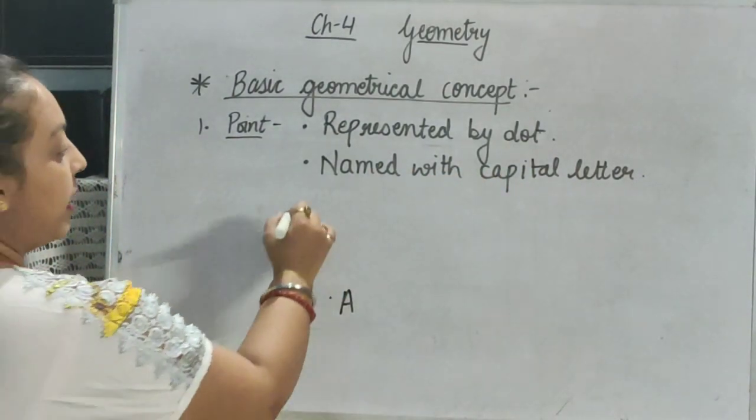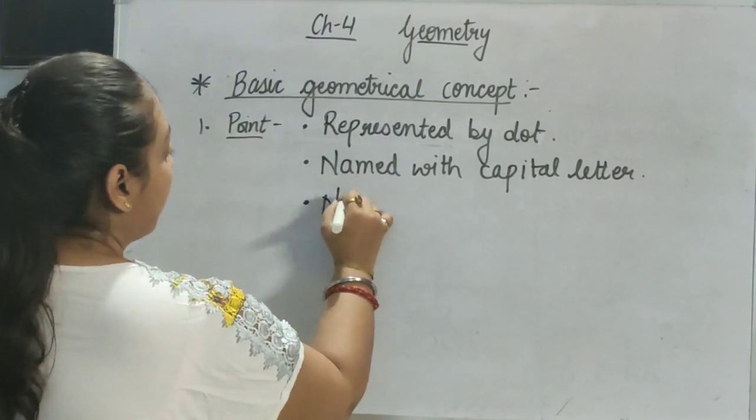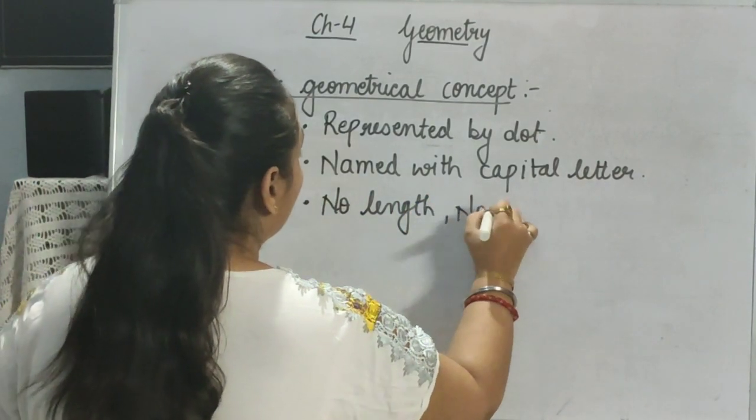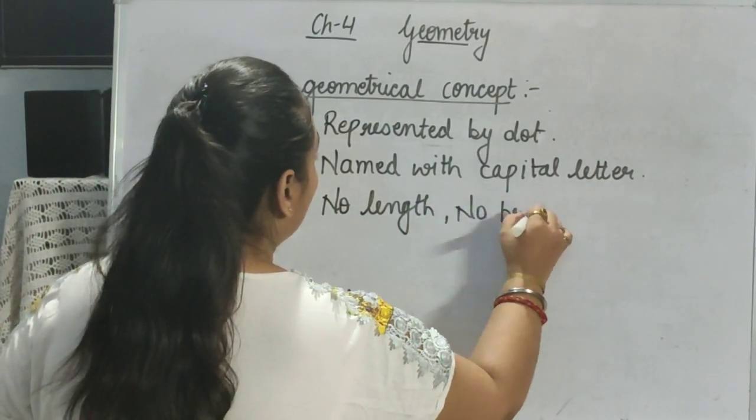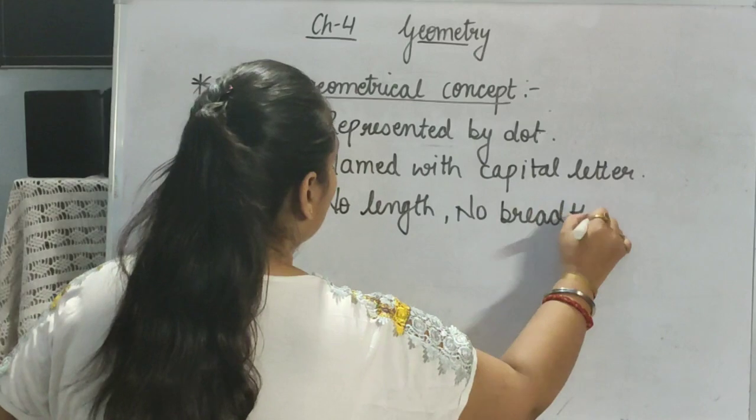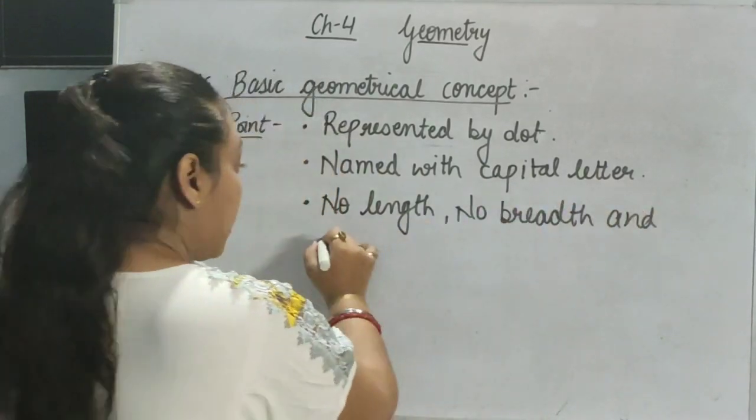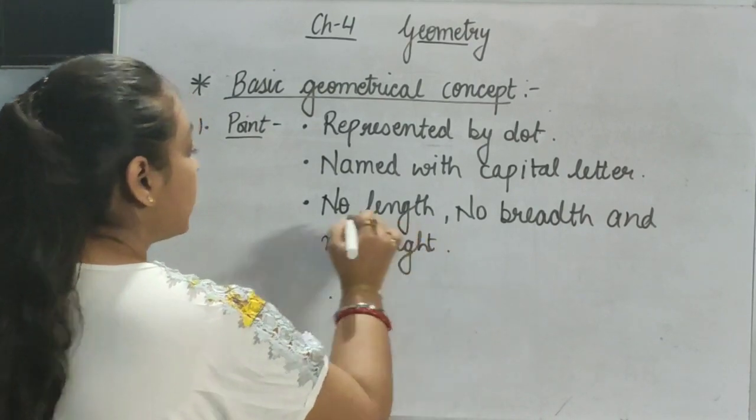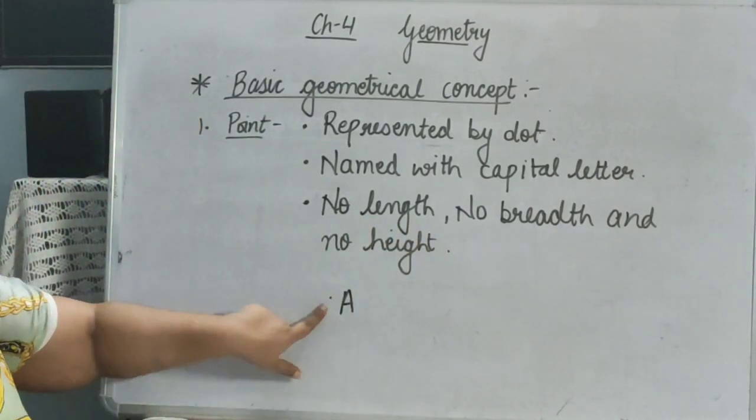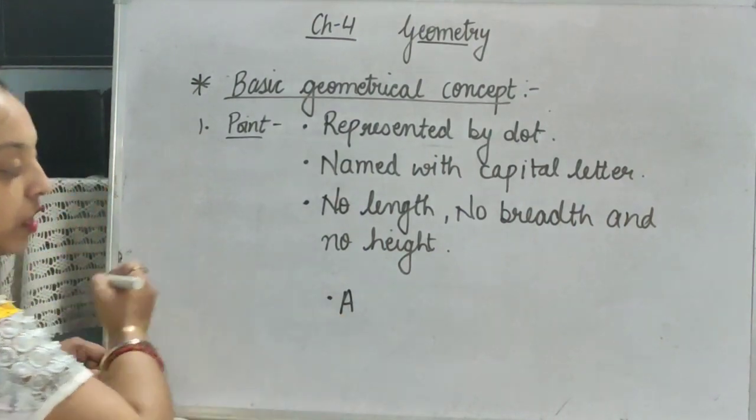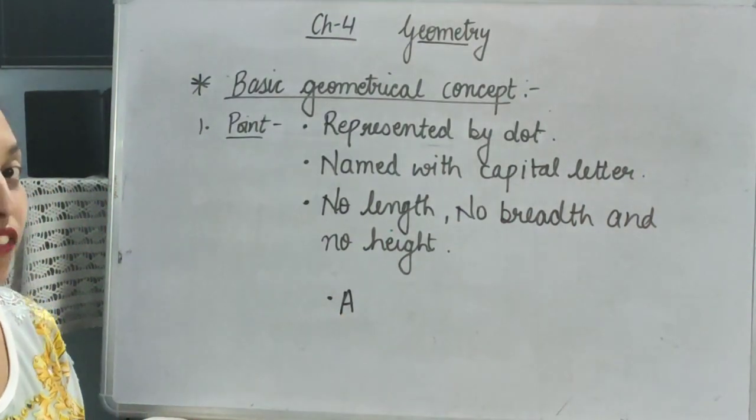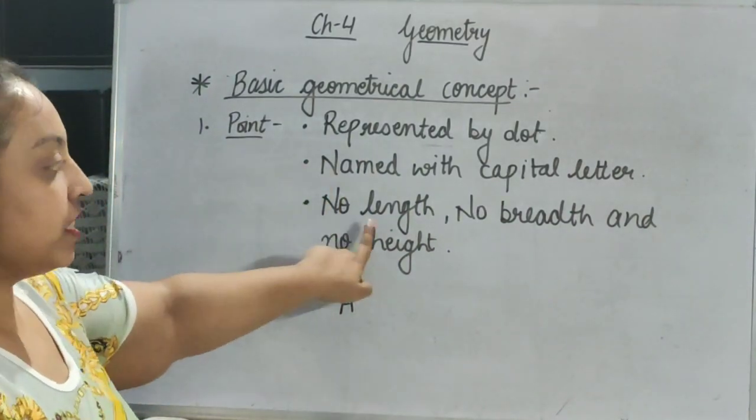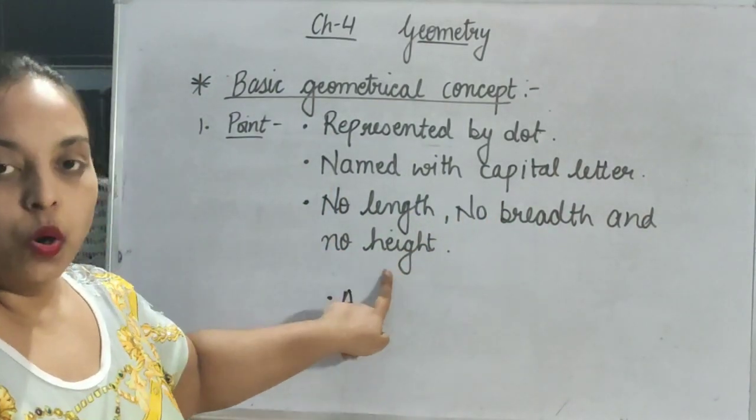Next point is, it has no length, no breadth, and no height. Can you see this dot? This is a dot. And we can see that it is not having any length, breadth, and height. So the quality of a point is, it has no length, no breadth, and no height.